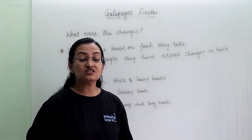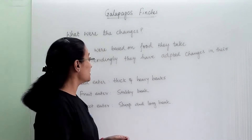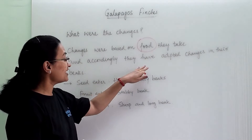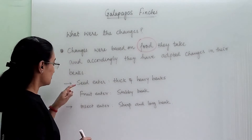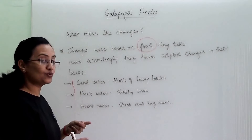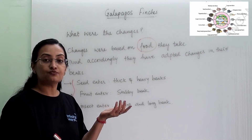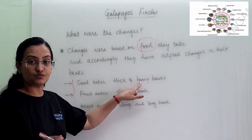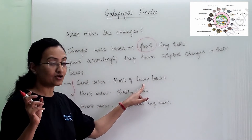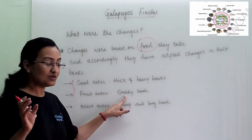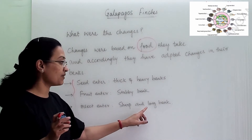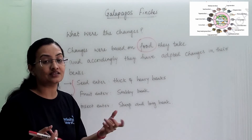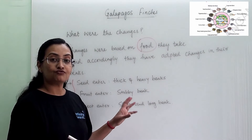The differences in food needs made the finches adapt certain changes, which is what we see today in the 13 different varieties. Changes were based on the food they take, and accordingly they adapted changes in their beaks. As you can see in the picture, different beak structures exist as per food need: seed eaters have thick and strong beaks to break the hard outer layer, fruit eaters have a stubby beak, and insect eaters have a sharp and long beak to catch insects.